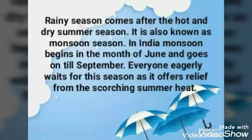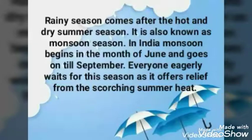The rainy season comes after the hot and dry summer season. It is also known as monsoon season. In India, monsoon begins in the month of June and goes on till September. Everyone eagerly waits for this season as it offers relief from the scorching summer heat.